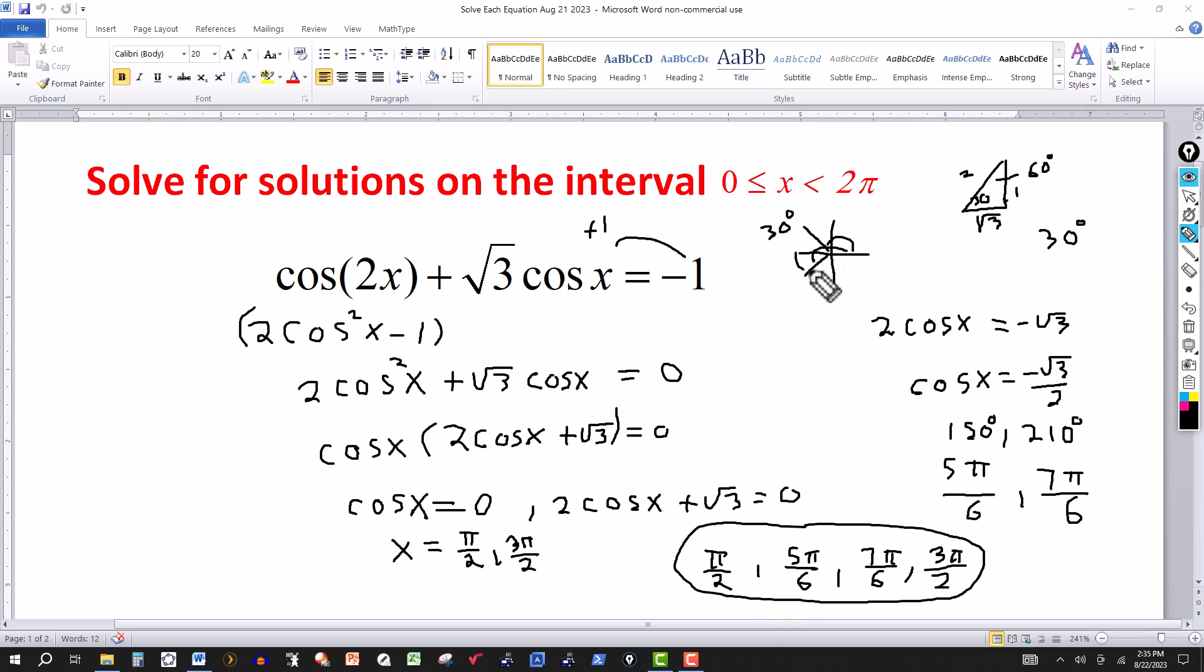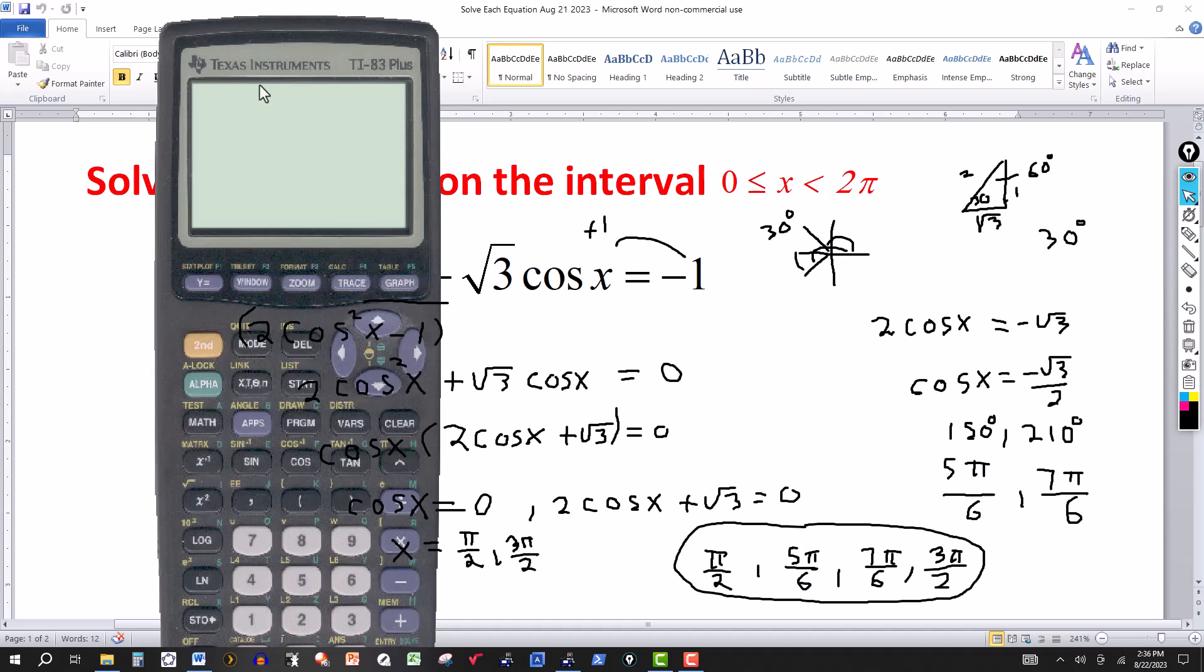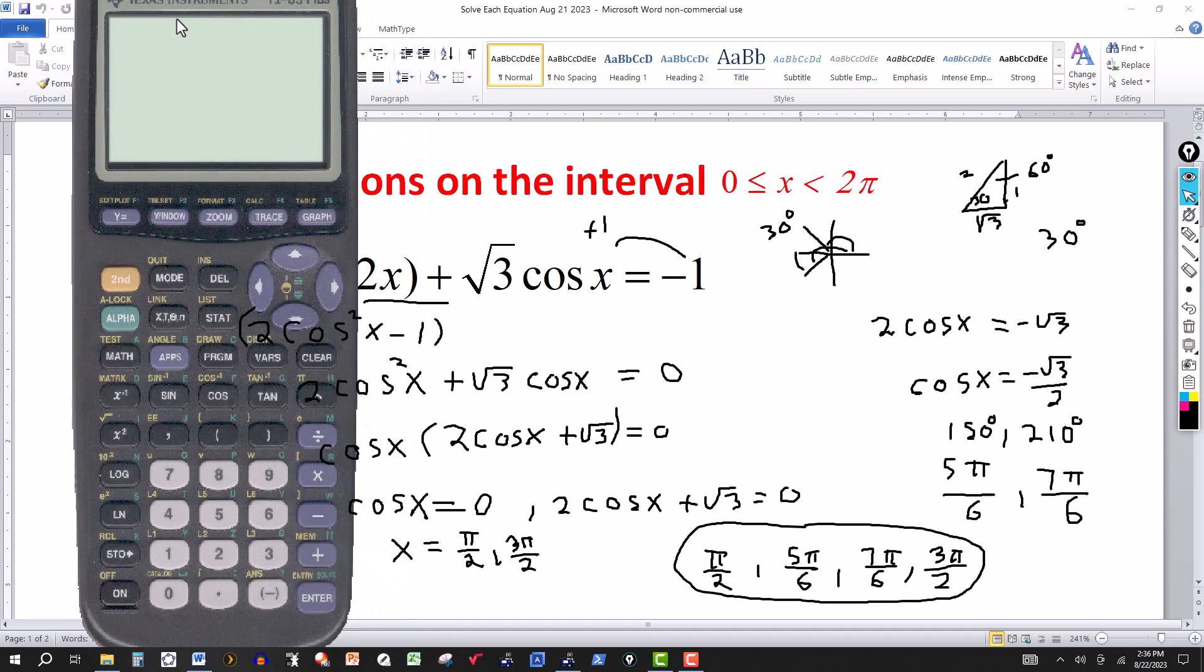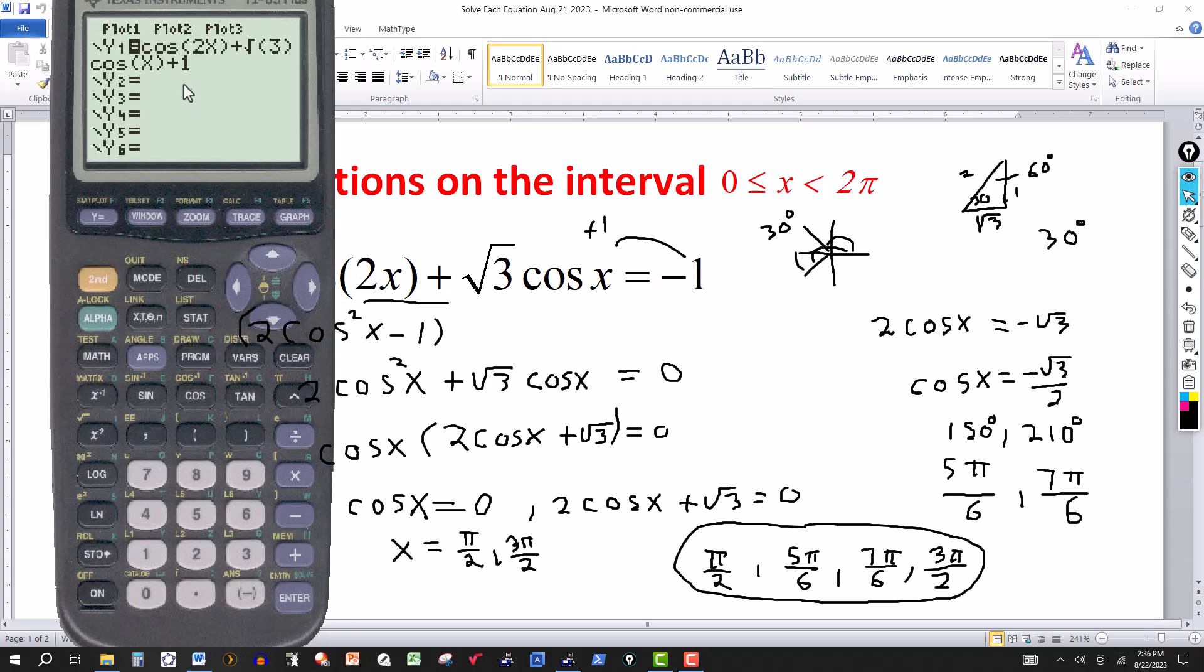And all I'm going to do is take this equation, the original one, set it equal to zero. So taking the negative 1 over that portion of it, I'm going to put it in the calculator, as you'll see in a few seconds here. So here's the calculator, and I've already entered the expression that I'm going to graph here. And there it is.